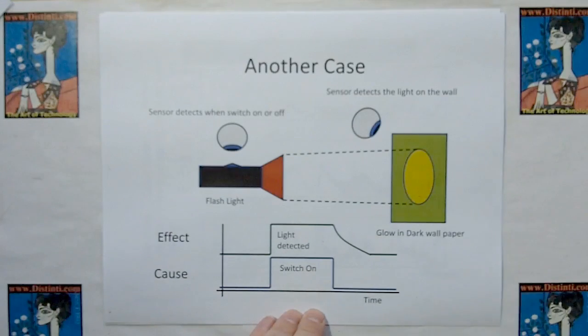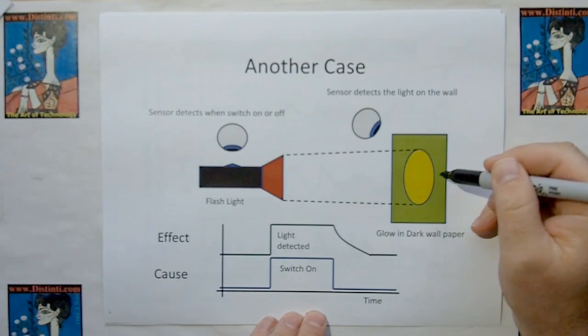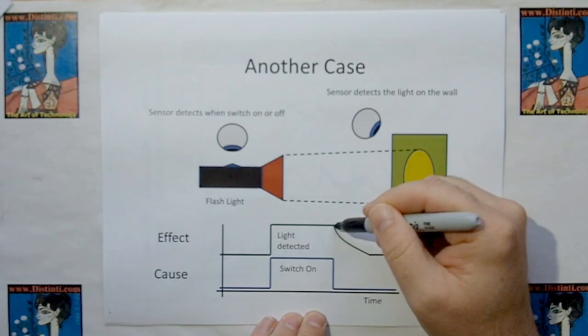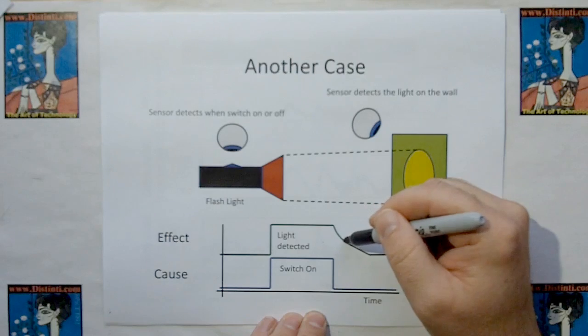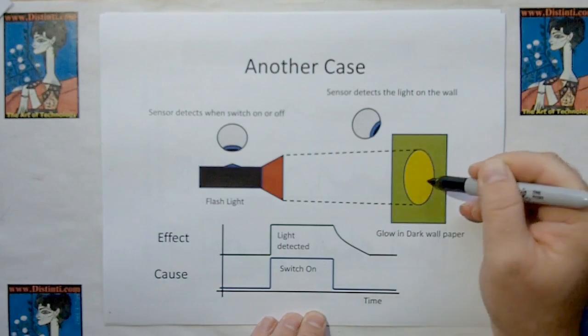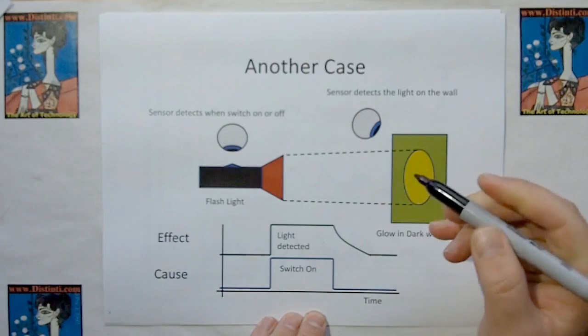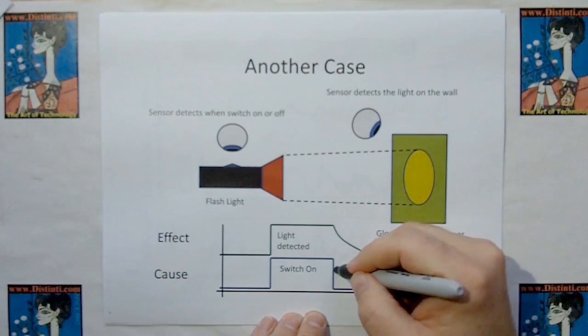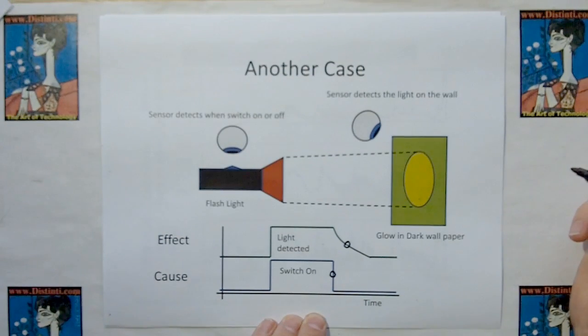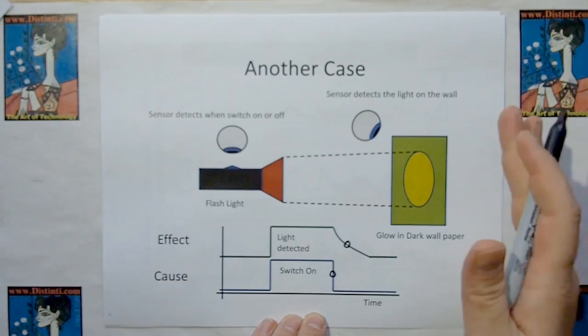And now there's another case. Suppose I put glow-in-the-dark wallpaper on the wall. Well, as you switch off, there's going to be a latency or a slow decay effect as the sensor detects the light fade away as the glow-in-the-dark material gives up its light. And this is still okay in the rules of causality because the cause still leads the effect. So the cause has to come before the effect.